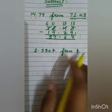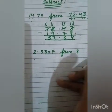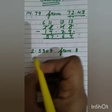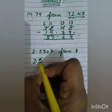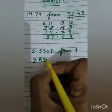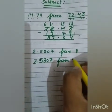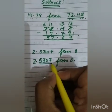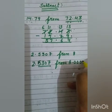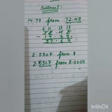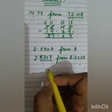Now here is Part B: subtract 2.5307 from 8. The first step is to convert into like decimals. 2.5307 has 4 decimal places after the decimal point, so you have to write 4 zeros after 8, making it 8.0000. Now subtract as we did in question number 1.